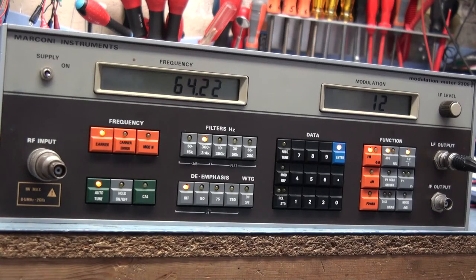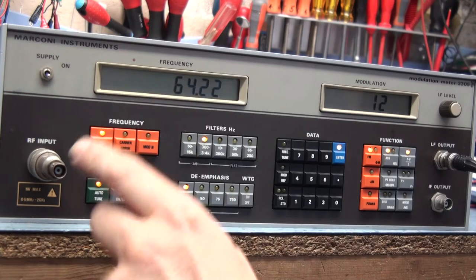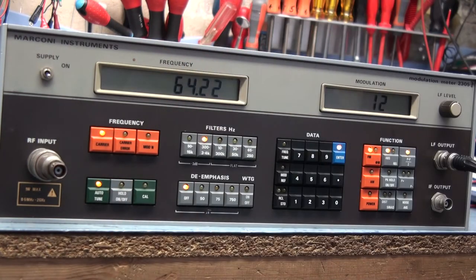This is a Marconi 2305 modulation meter. I've got another one of these. I bought this one from the same seller that was selling the original one. This is a spares and repair. I was initially going to buy it about a year ago and decided I was not going to use it.